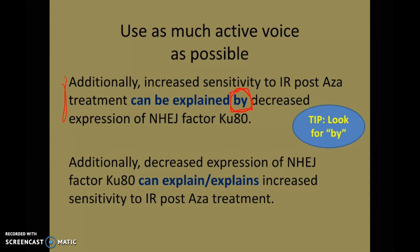There are some exceptions, but in general that's one way you can start looking for passive voice. The revision: 'Additionally, decreased expression of NHEJ factor KU80 can explain — or explains — increased sensitivity to IR post-AZE treatment.' The sentences aren't radically different, and the first sentence isn't wrong. But as a reader, it is a lot easier to follow active sentences. If you want to engage your reader, really pay attention to moments where you can change passive to active.